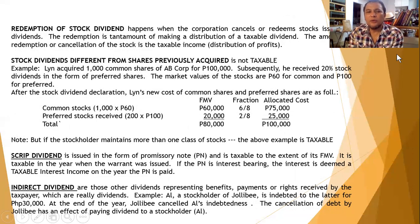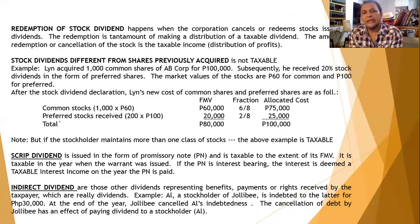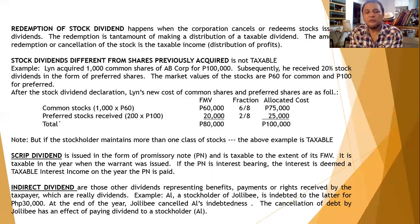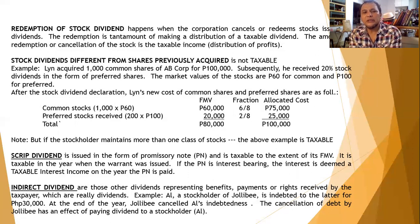Fourth — if there is a redemption of stock dividend, meaning the stock dividend is redeemed: this happens when the corporation cancels or redeems stocks issued as dividends. For example, a corporation declares a 10% stock dividend but then cancels or repurchases it. When it buys back the stock dividend, it is deemed to be making a distribution of a taxable dividend. The amount of the redemption or cancellation of the stock is the taxable income of the shareholder.